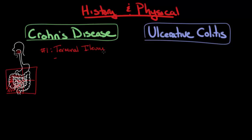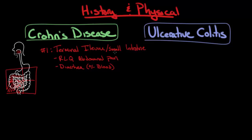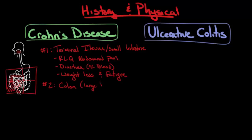Inflammation of the terminal ileum often results in right lower quadrant abdominal pain, and inflammation in this area may also result in diarrhea that may or may not be bloody. Other parts of the small intestine may also be involved, and if enough of the small intestine is involved — which is where nutrients are primarily absorbed — you can get malabsorption, resulting in poor nutrition, weight loss, and fatigue. The second most common location of inflammation is the colon, which is also known as the large intestine. The colon is mainly responsible for reabsorbing water from the stool.